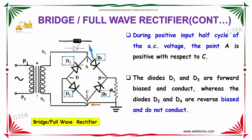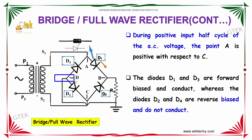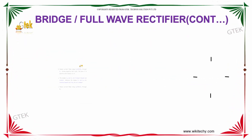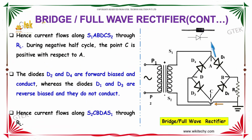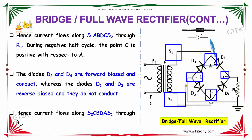During the positive half-cycle of the AC voltage, the point A is positive with respect to C. The diodes D1 and D3 are forward biased and conduct, whereas the diodes D2 and D4 are reverse biased and do not conduct. Hence, current flows from S1, A, B, D, C, and S2 through RL.